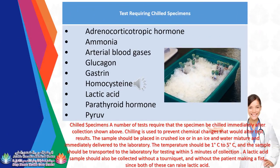Tests requiring chilled specimens include: Adrenocorticotropic hormone (ACTH), Ammonia, Arterial blood gases, Glucagon, Gastrin, Homocysteine, Lactic acid, and Parathyroid hormone. Chilled specimens must be chilled immediately after collection to prevent chemical changes that would alter test results. The sample should be placed in crushed ice or an ice and water mixture and immediately delivered to the laboratory. The temperature should be 1°C to 5°C, and the sample should be transported within 5 minutes of collection. A lactic acid sample should also be collected without a tourniquet and without the patient making a fist, as both can raise lactic acid levels.